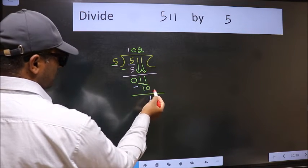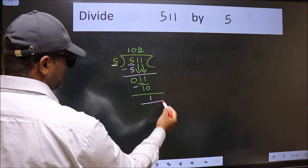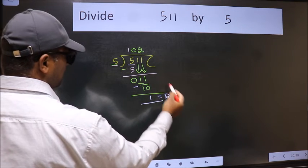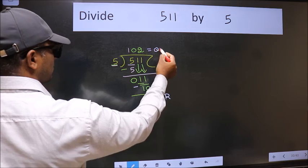No more numbers to bring down. So we stop here. This is our remainder, and this is our quotient.